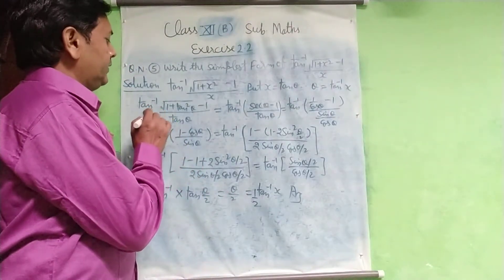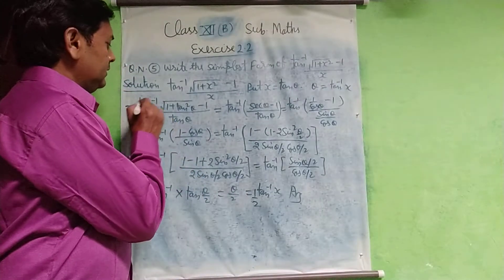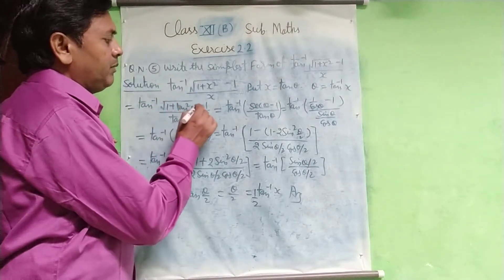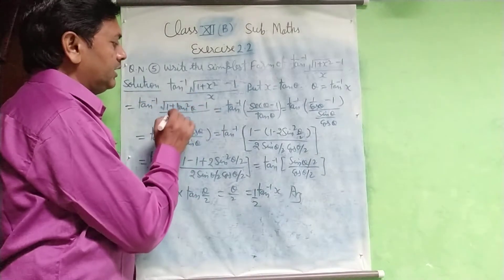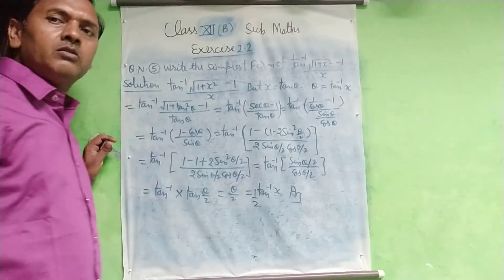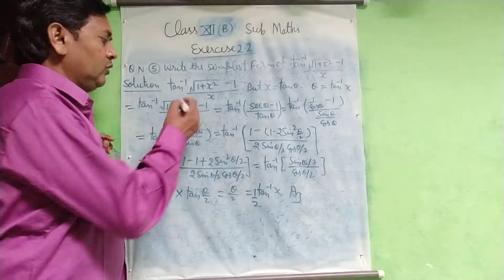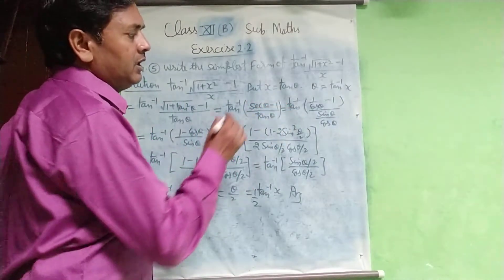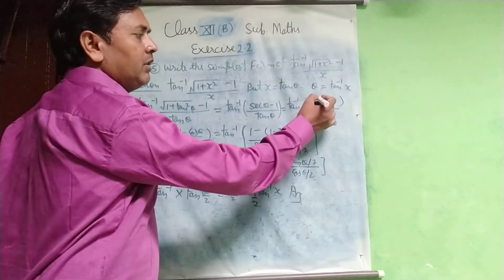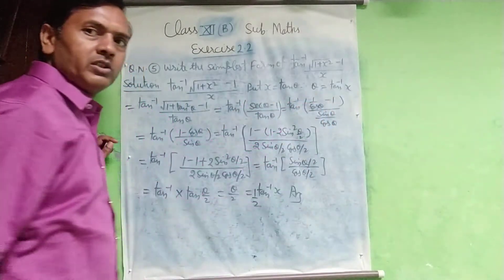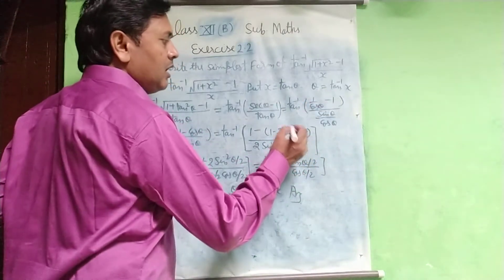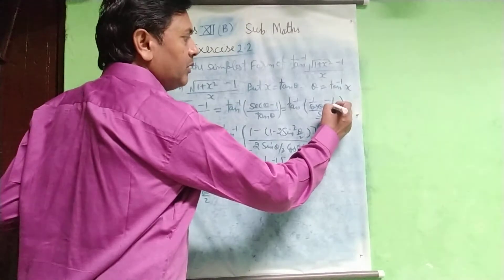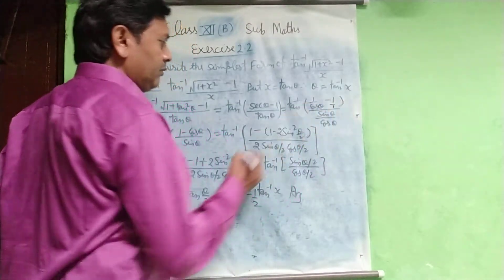Substituting, we get tan⁻¹[(√(1+tan²θ) - 1)/tanθ]. Since 1 + tan²θ = sec²θ, the square root becomes secθ. This gives tan⁻¹[(secθ - 1)/tanθ], which equals tan⁻¹[(1/cosθ - 1)/(sinθ/cosθ)]. Taking LCM as cosθ, cosθ cancels.